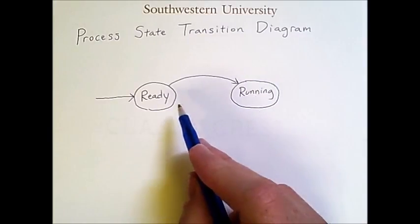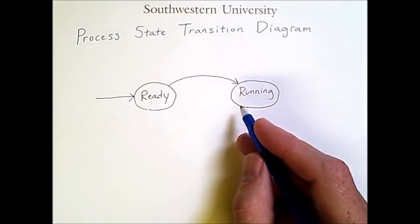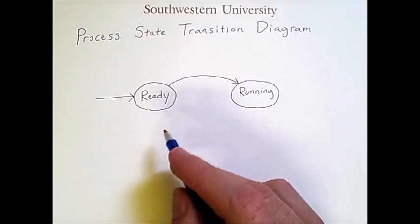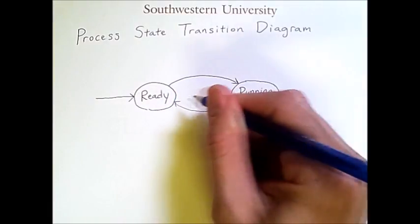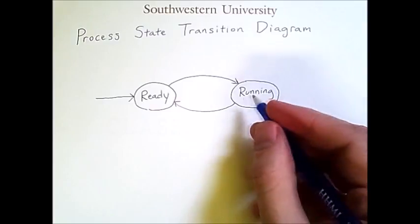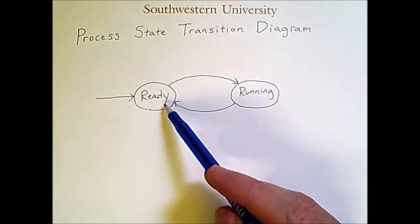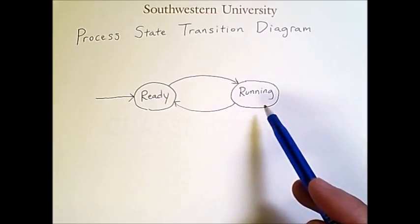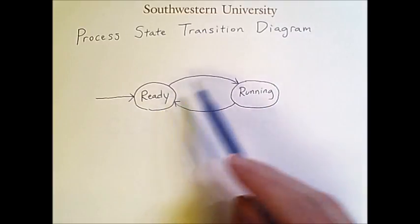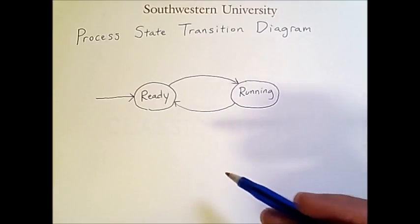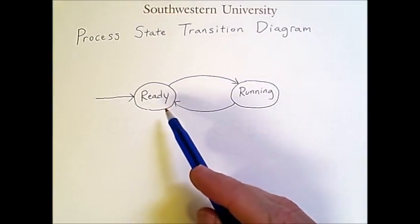Processes go from ready to running, and after running for a while, if you want to make sure different processes have a chance to run, you may cause a running process to go back to a ready state to give up the processor to another ready process. Several processes are ready to go, and we pick one to run. It runs for a specified amount of time, then gives up the processor so a different process can run. This is fair because every process gets a turn, preventing any ready process from starving.